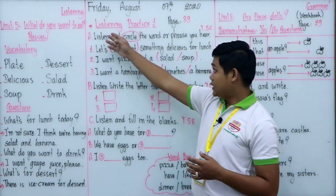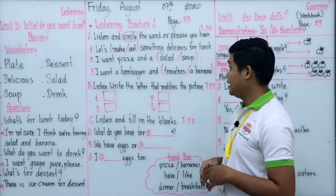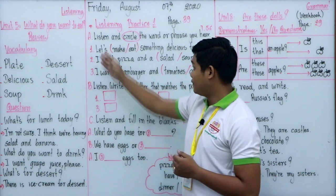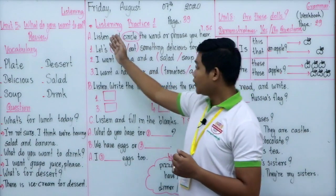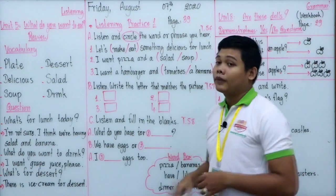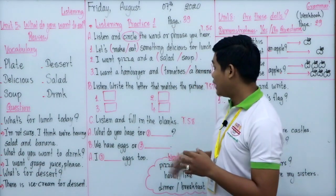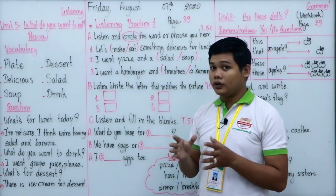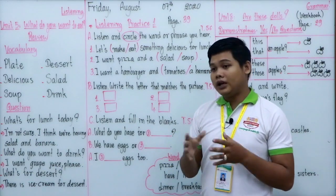Now let's move to our exercise. We will practice Listening Practice One, page 39. For Section A we have three sections: A, B, and C. Section A: listen and circle the word or phrase you hear — Track 56. Before I play the track, I'd like you to read the three sentences first to get some idea and understand them before you listen.